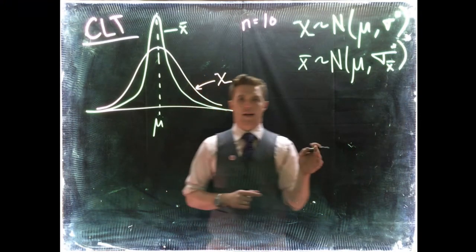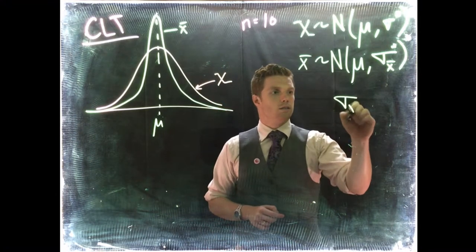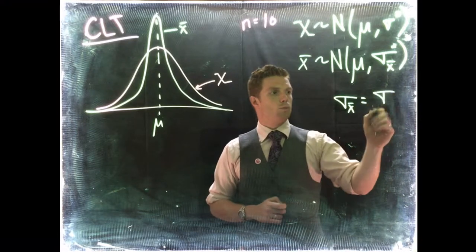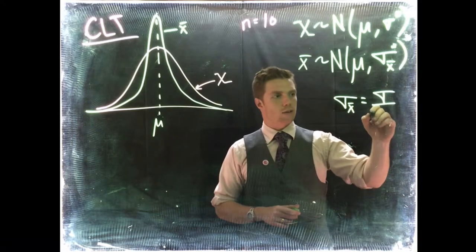And we talked a little bit about how to calculate that just as a review. Sigma with respect to X bar is just equal to the original population standard deviation divided by the square root of n.